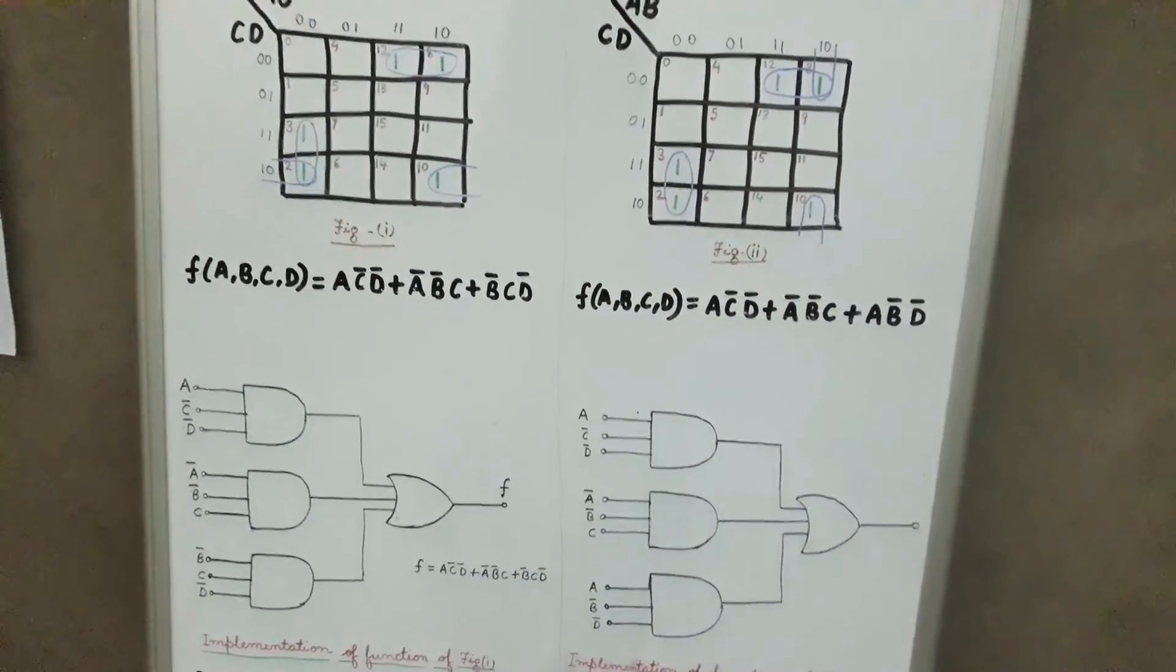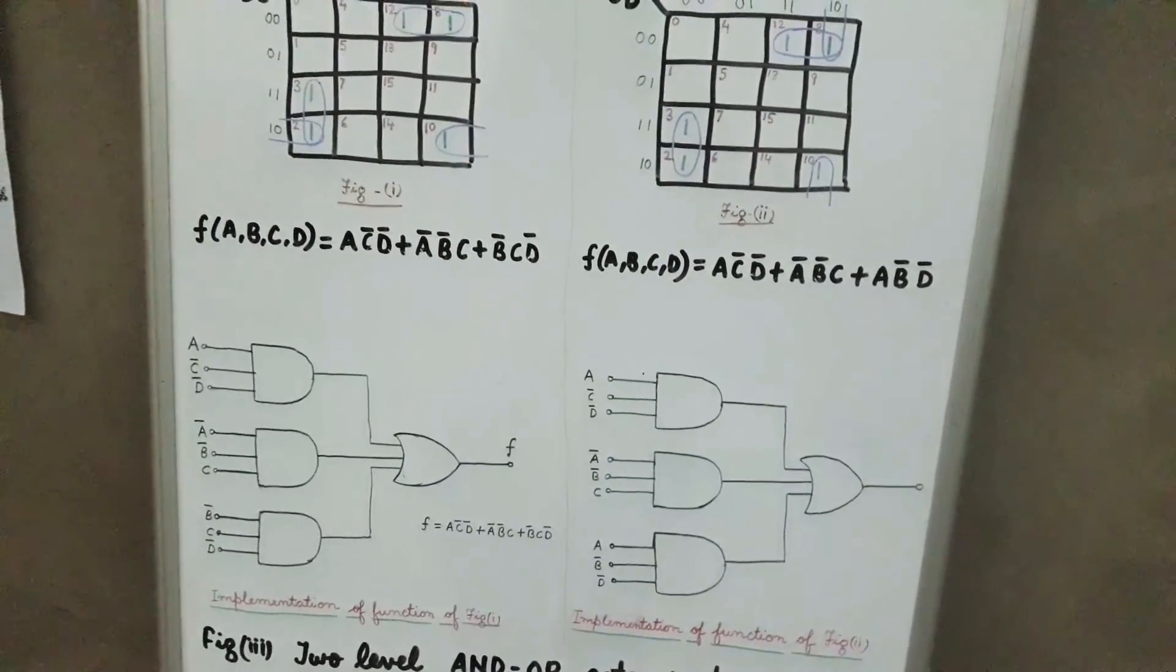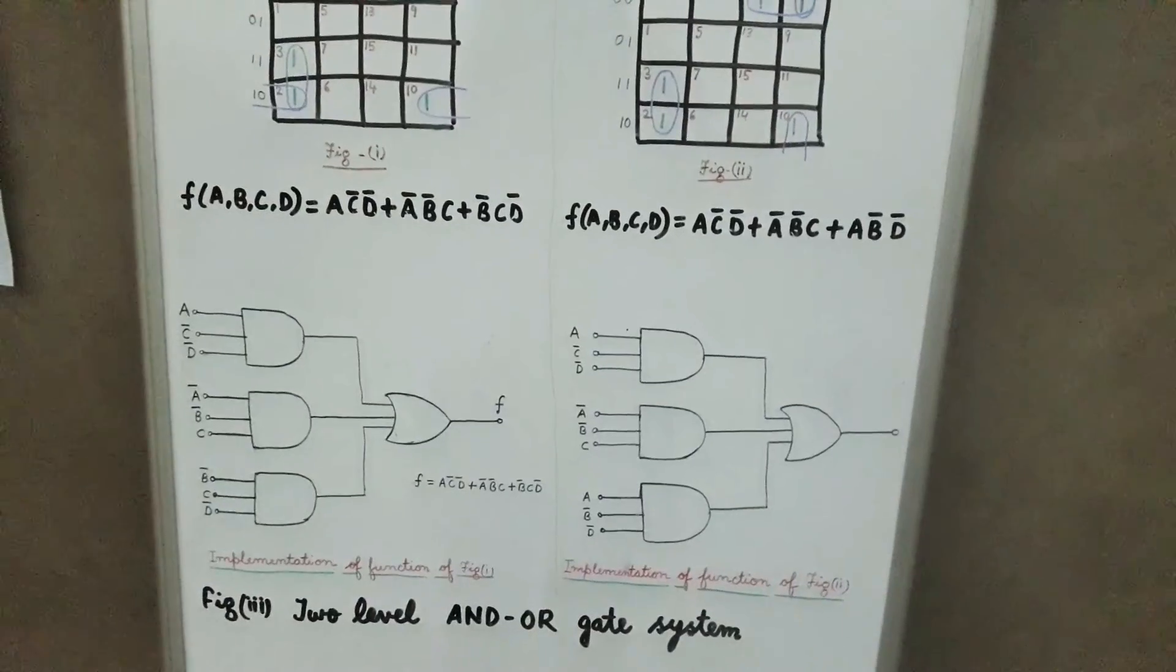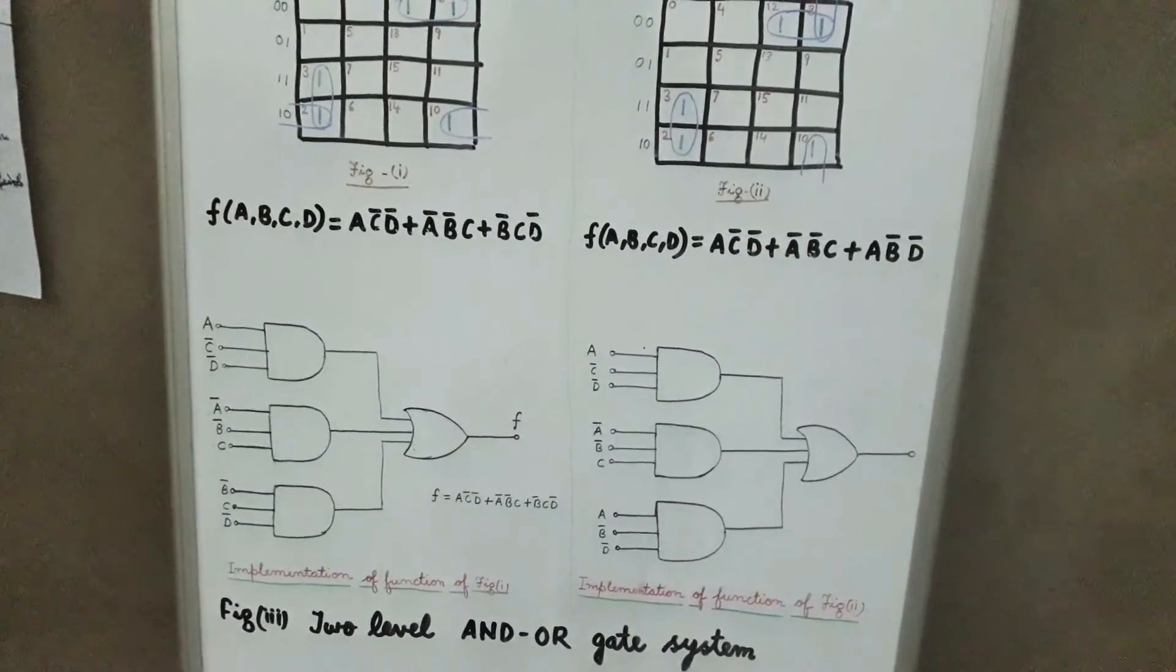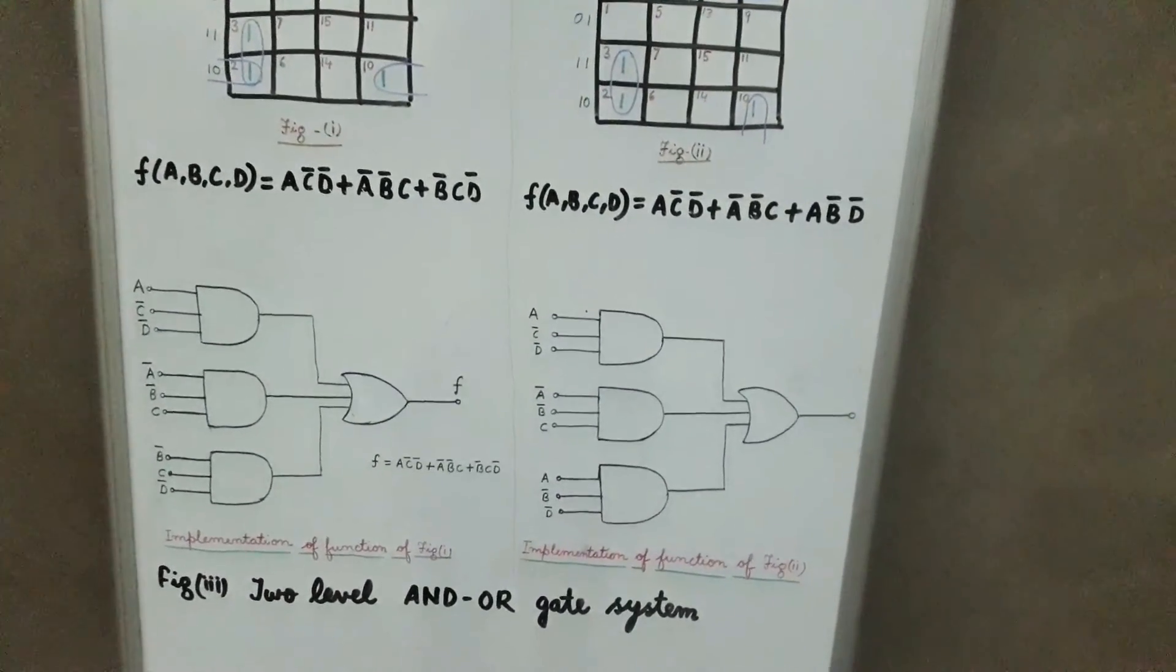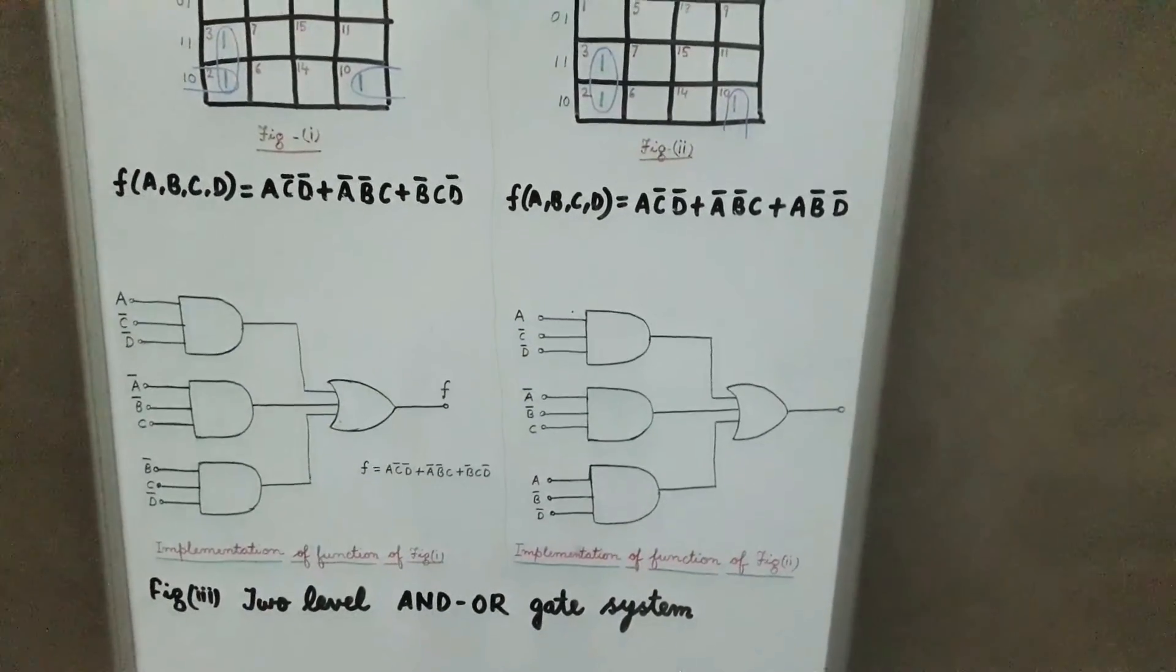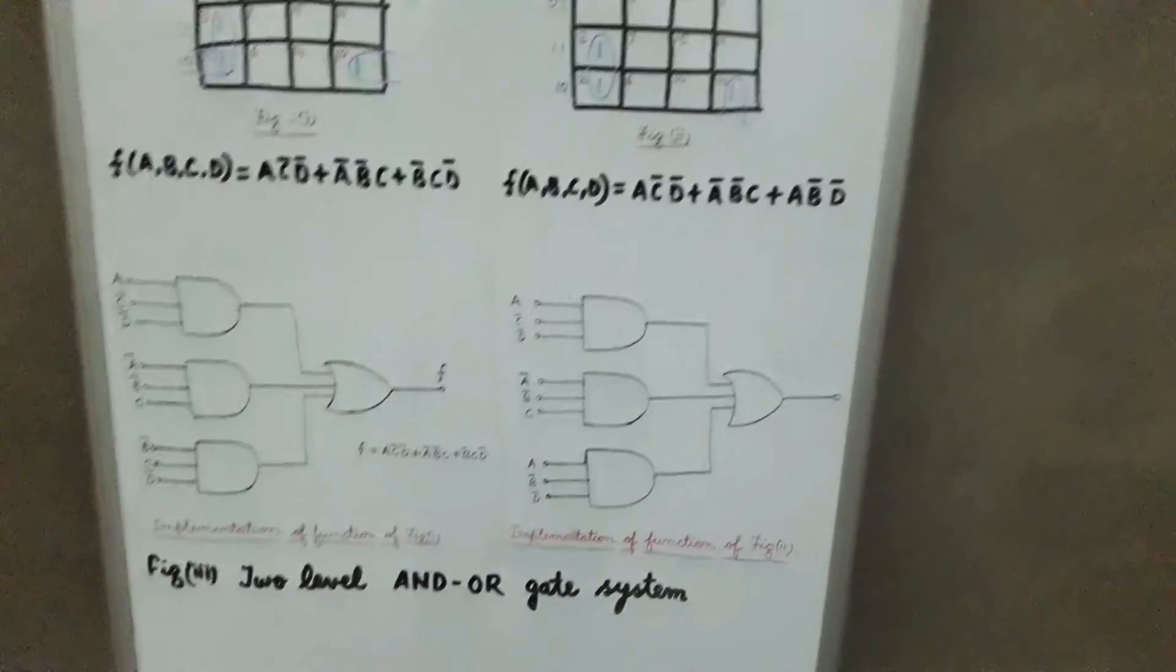The two-level gate systems are generally used because they are easy to design. Also, if there are fewer levels, the propagation time through the structure will be smaller as compared to the system with more levels. That's all in this class. We will discuss the rest in the next part.